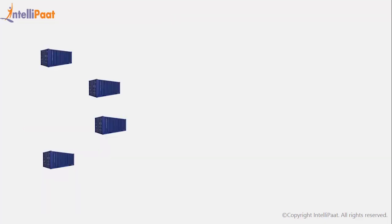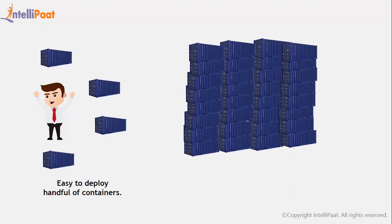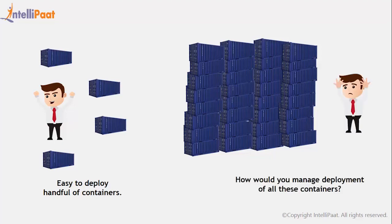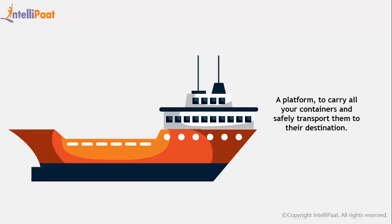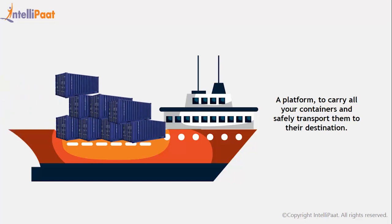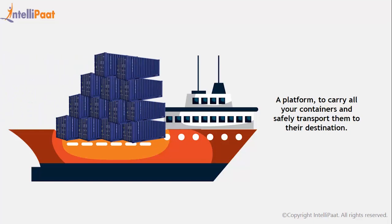Now, if you have got just a handful of containers to be deployed, you can easily manage it. But what if you have got thousands of containers and need to deploy them into different environments, keep track of which container got deployed to which system, and also manage all the complexities related to the containers? How are you going to manage this huge number of containers effectively with proper accuracy? You need a platform, maybe something like a ship, which could carry all the containers without causing any harm to their stuff inside, making sure that each of them gets delivered to its specified destination and maintaining the entire track of the containers.